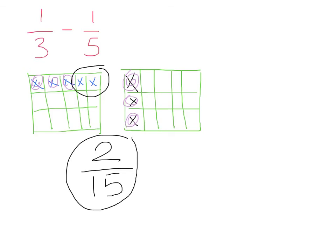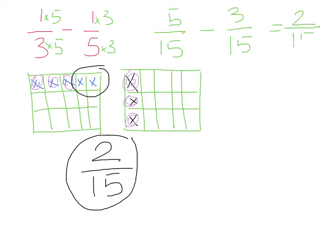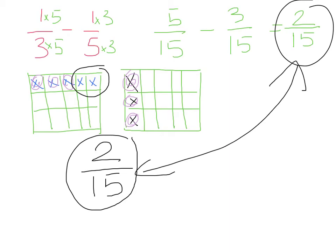I'm going to show you the answer is the same using the rule. For one third minus one fifth, the denominators are 3 and 5. Finding the lowest common multiple gives us 15. So 3 times 5 gives me 15, and 5 times 3 gives me 15. Whatever I do to the denominator, I do to the numerator. My new fraction is 5 over 15 minus 3 over 15. Five minus 3 equals 2 over 15. Regardless of which method I use, I end up with the exact same answer.